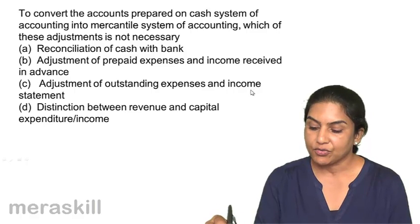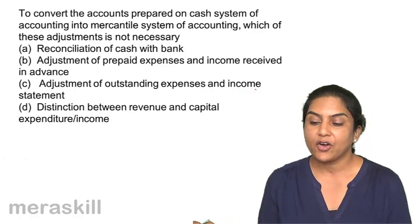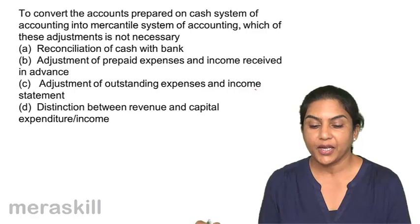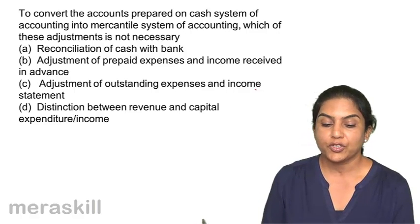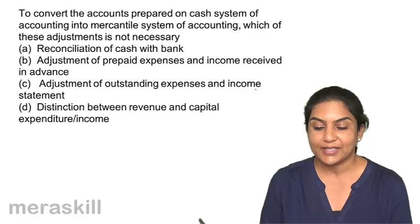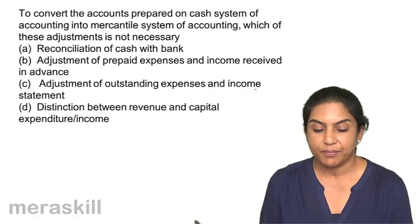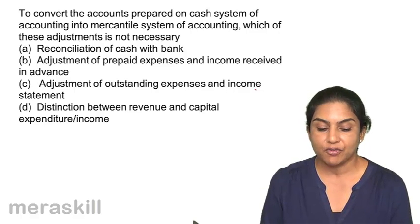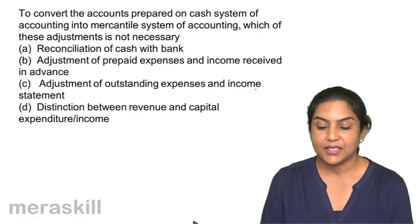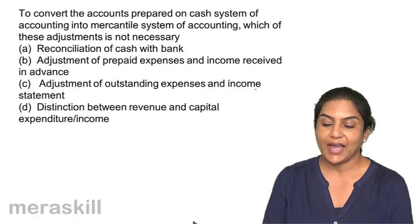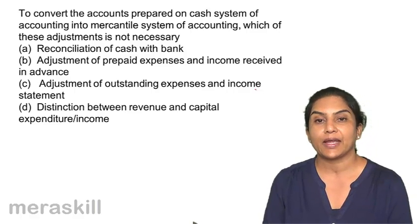To convert accounts prepared on cash system of accounting into mercantile system of accounting, which of these adjustments is not necessary? A: Reconciliation of cash with bank. B: Adjustment of prepaid expenses and income received in advance. C: Adjustment of outstanding expenses and income. D: Distinction between revenue and capital expenditure or income.